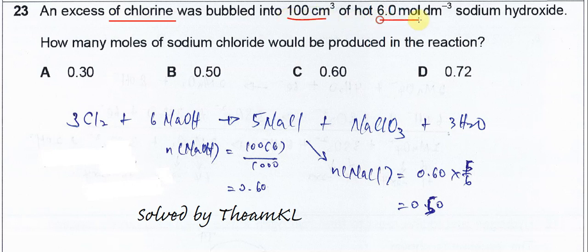Volume is given, concentration is given, so we calculate the moles. CV over 1000, we will get 0.6 for sodium hydroxide.